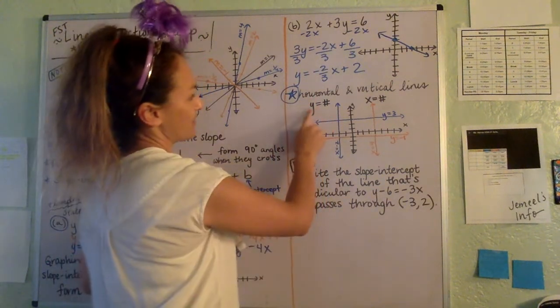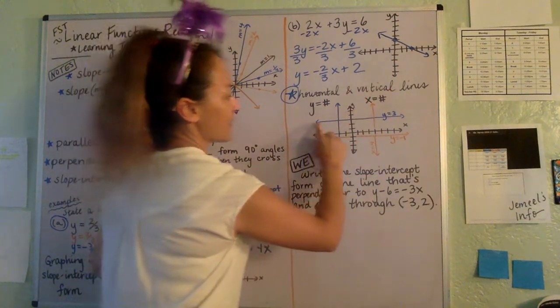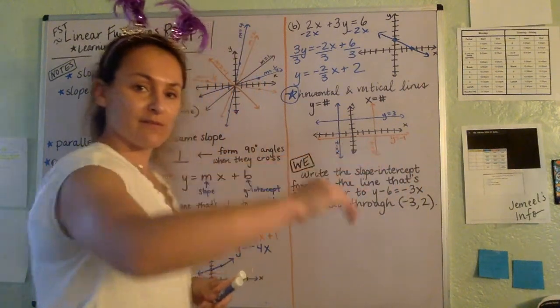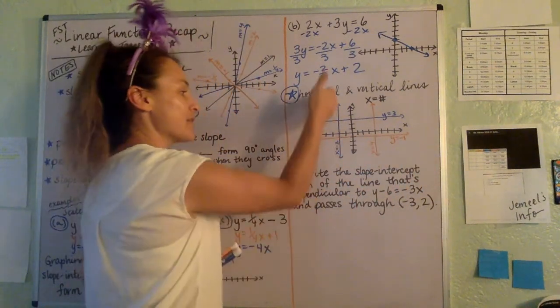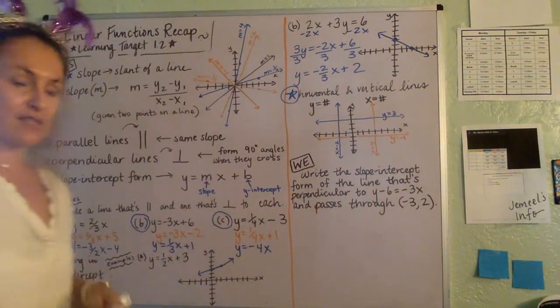So just a reminder, horizontal lines are simply Y equals a number. Vertical lines are simply X equals a number. For example, Y equals 3 or Y equals negative 1. They're perfectly flat lines. And then X equals negative 2 or X equals 4. Those are vertical lines.